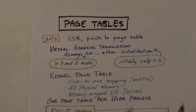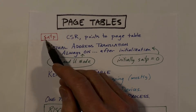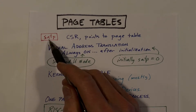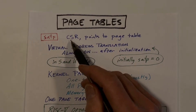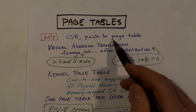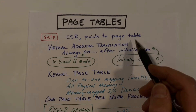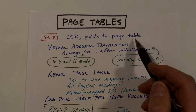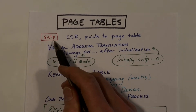The register that we need to know about here is SATP, the supervisor register for address translation pointer. It is a control and status register and it will be set to point to the page table. Page tables are kept in main memory, and at any one time there is one page table in use, and that is the one that's pointed to by the SATP register.